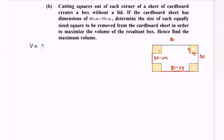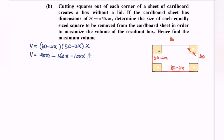So now we find the volume. V equals (80 − 2x) multiplied by (50 − 2x) multiplied by the height x. Expanding: V equals 80 × 50 = 4000, minus 160x, minus 100x, plus 4x squared, and we still have the x factor. So V equals 4000x minus 260x squared plus 4x cubed — that is the formula for the volume.